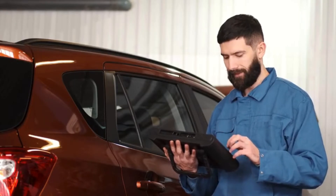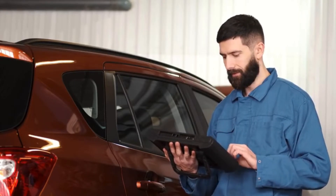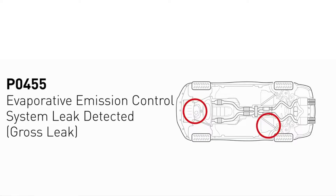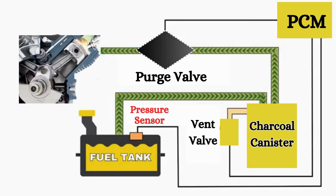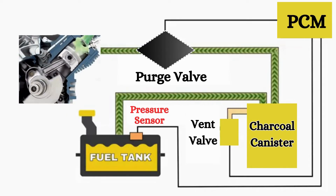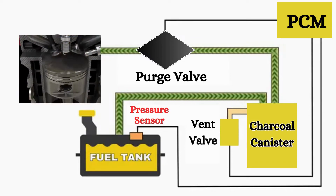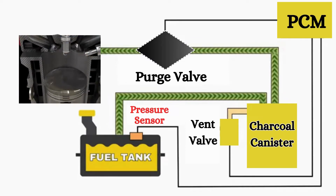First off, what is the P0455 code? It's a diagnostic trouble code that indicates a large leak in your car's evaporative emission control system. Your car's EVAP system is designed to capture and recirculate fuel vapors to prevent them from escaping into the atmosphere.